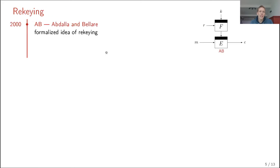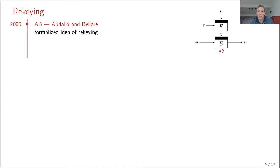The idea of parallel fresh re-keying was formalized by Abdallah and Bellara in 2000. They looked at a construction where the message goes to the ciphertext and the subkey is derived from a PRF evaluated on the key and the re-keyer.